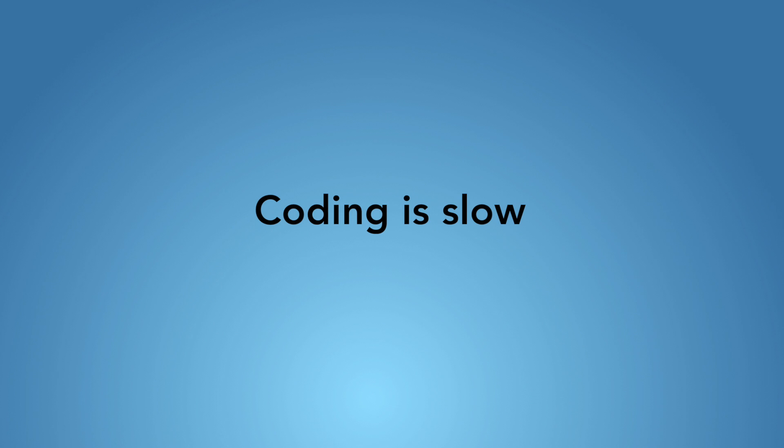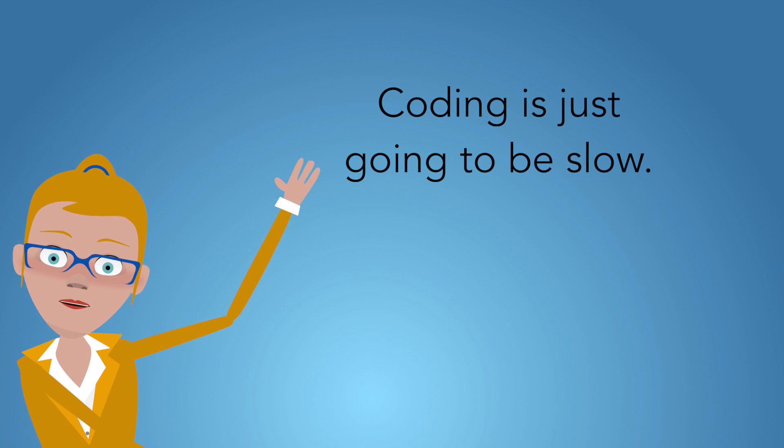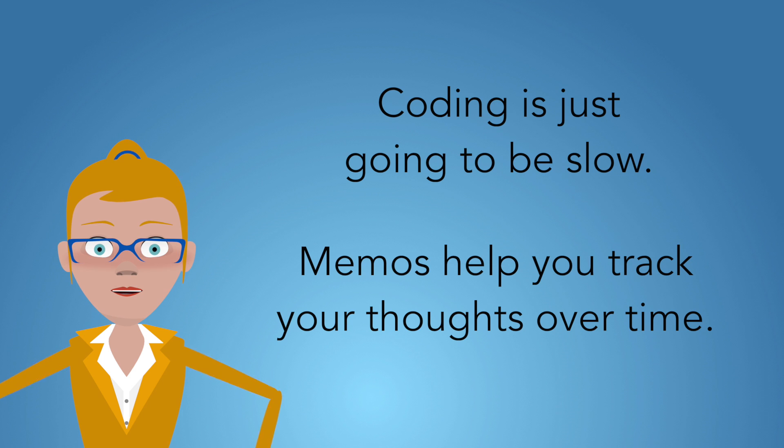Coding is a slow process. People who are used to doing statistical analysis, you finally get your data organized in a way that you can run a model and you press the button and it runs. Coding is much slower because it's in the reads, thinking about it, and then stepping back.